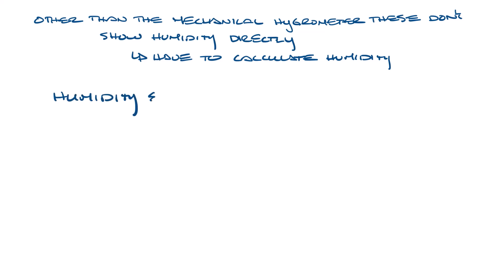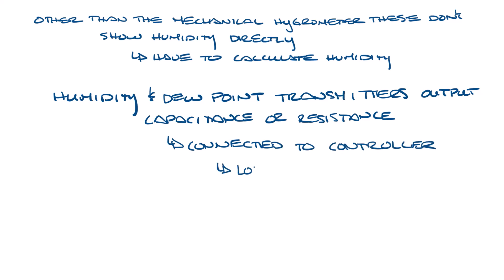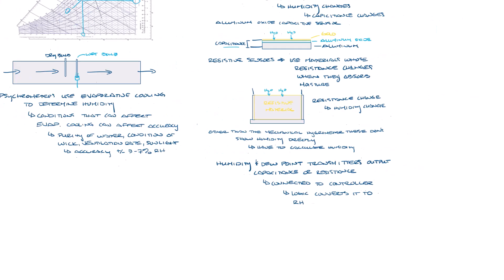So on HVAC equipment, you'll see devices like humidity transmitters and dew point transmitters, which have outputs that are capacitance or resistance, and they're connected to a controller with some logic that takes this output and converts it into the relative humidity.